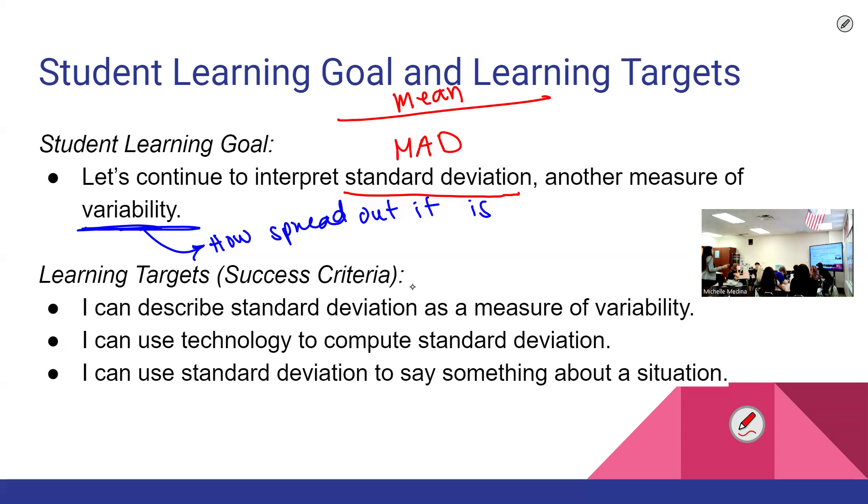When the data is symmetric, the mean matches the median. When is it really easy to see the mean? When the data is symmetric. So this all kind of goes back together.